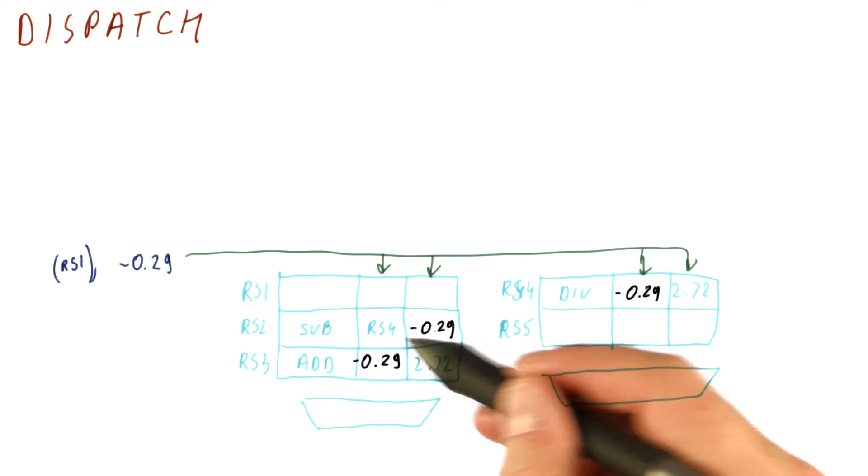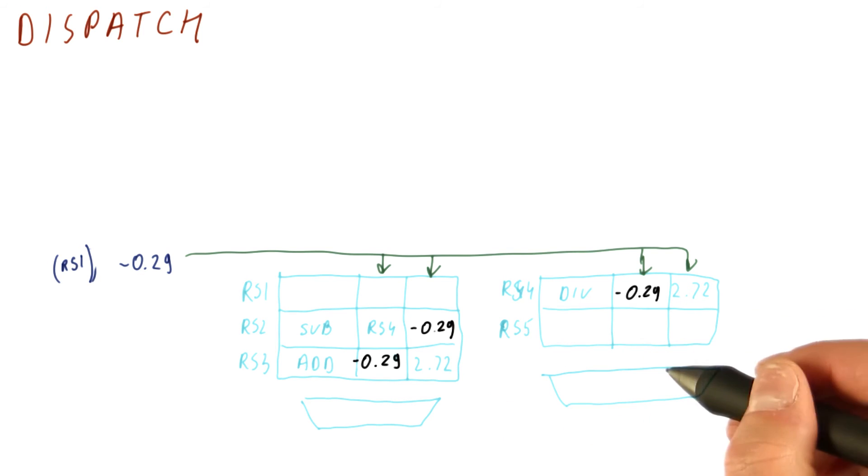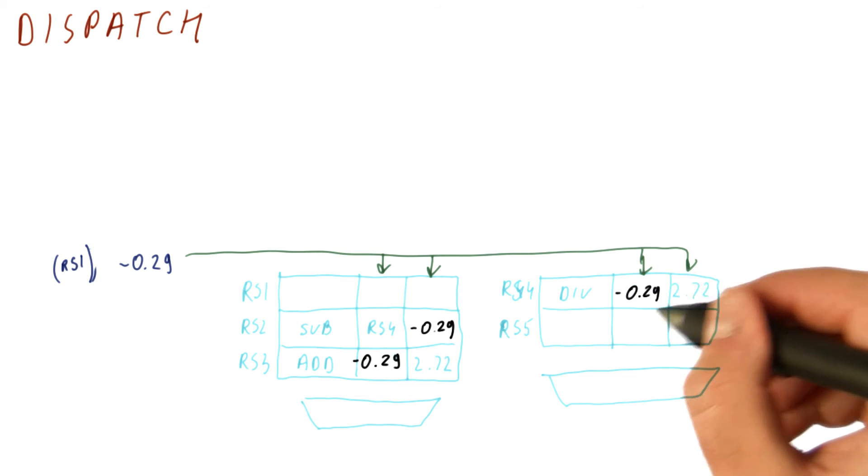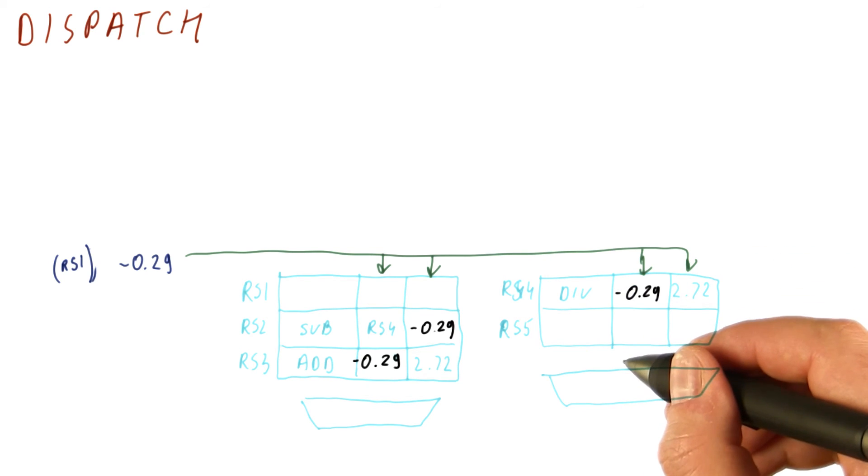Because these are going to different execution units, assuming that each execution unit can take one operation per cycle, this instruction, RS4, is going to execute in the multiplier.